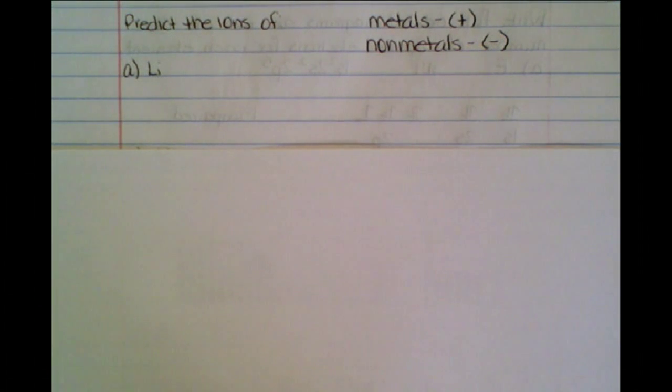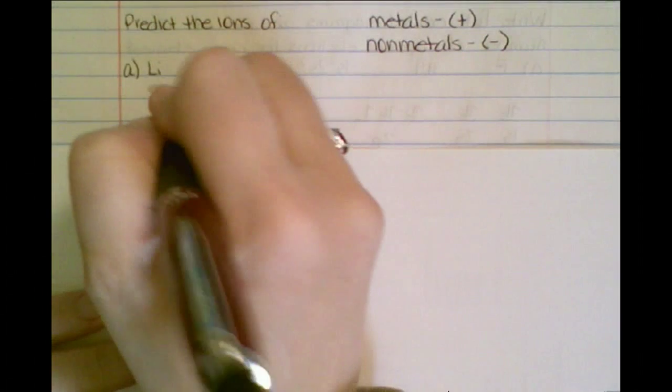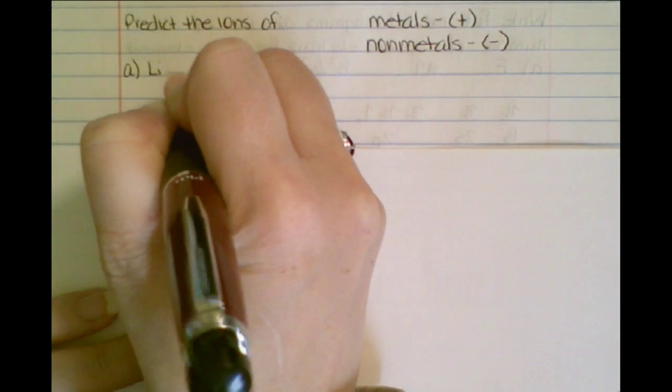So if we take that into consideration, then if I'm looking at lithium, I find it on the periodic table, how far away is it to get to a noble gas? Well, I have to go back one place in order for it to look like helium. So that means I went one place, so that means it's going to be Li plus one.